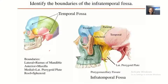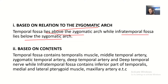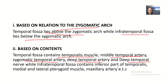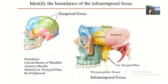Based on content, if you want to see the contents you can go watch the individual videos or use your atlas. The temporal fossa contains the zygomatic temporal artery, deep temporal artery, and deep temporal nerve. The infratemporal fossa contains the inferior parts of the temporalis muscle, the medial and lateral pterygoid muscles, and the maxillary artery.